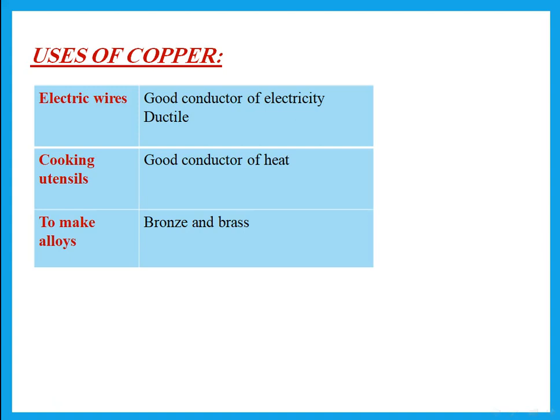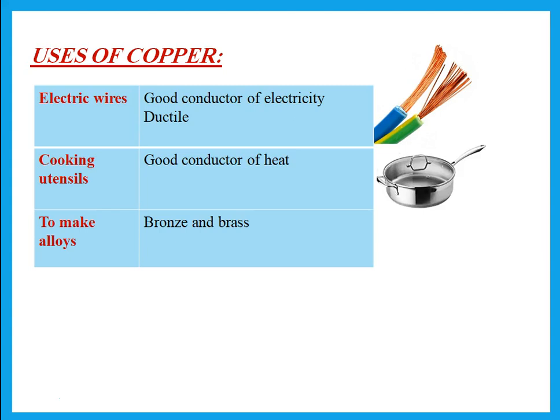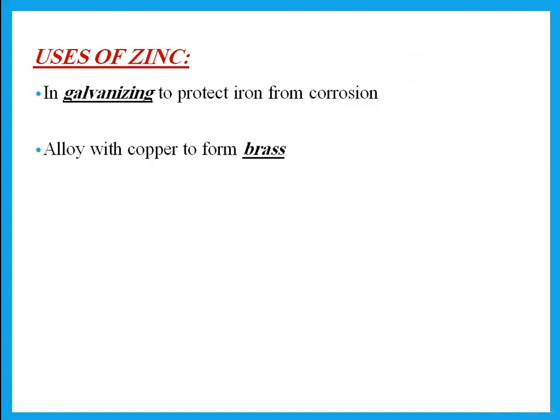Uses of copper: copper is used in electric wires because it is a good conductor of electricity and is ductile. It is used for cooking utensils because it is a good conductor of heat. It is also used to make alloys — bronze and brass. Zinc is used in galvanizing, which is a method of protecting iron from corrosion, and to make the alloy brass with copper.